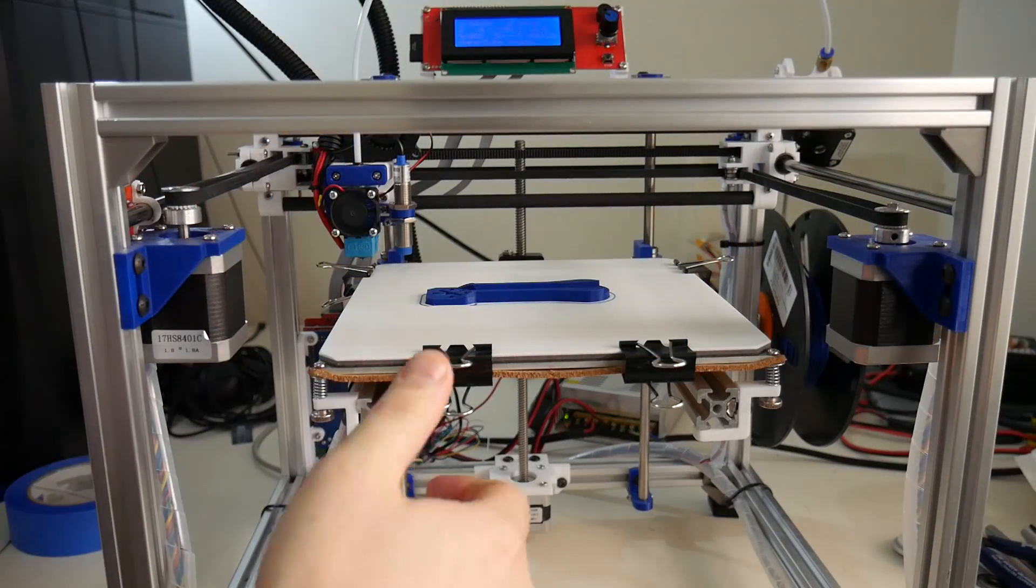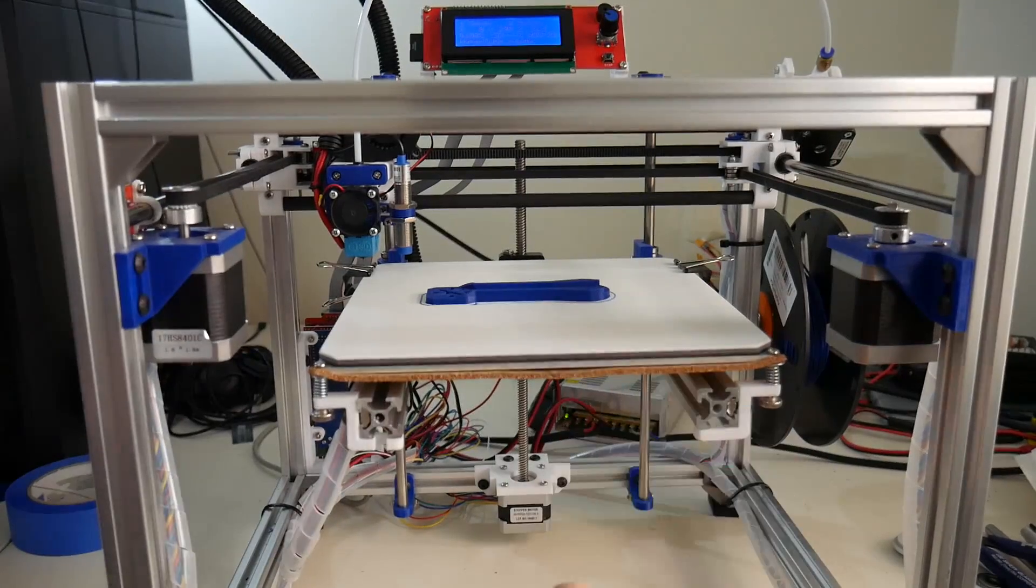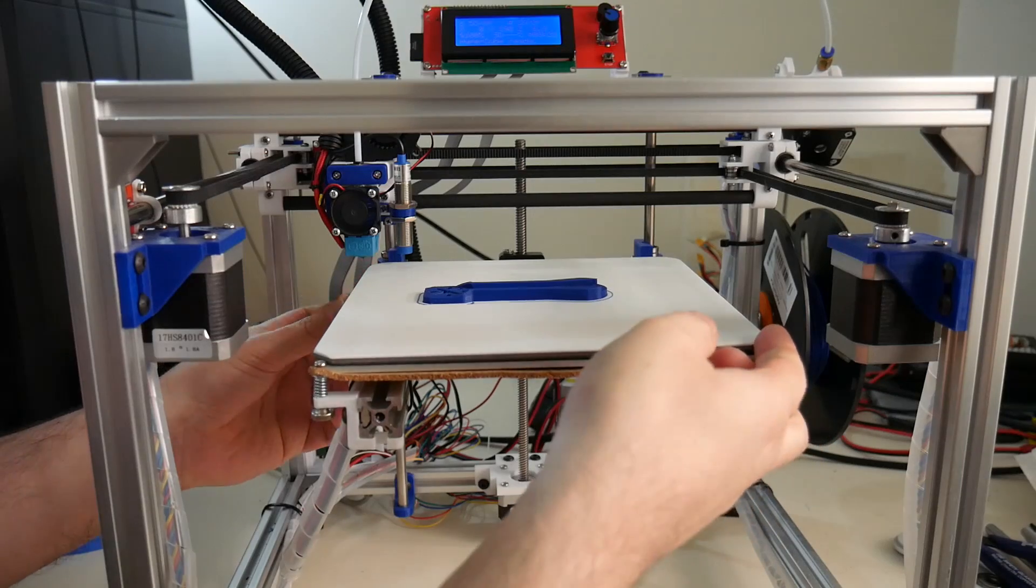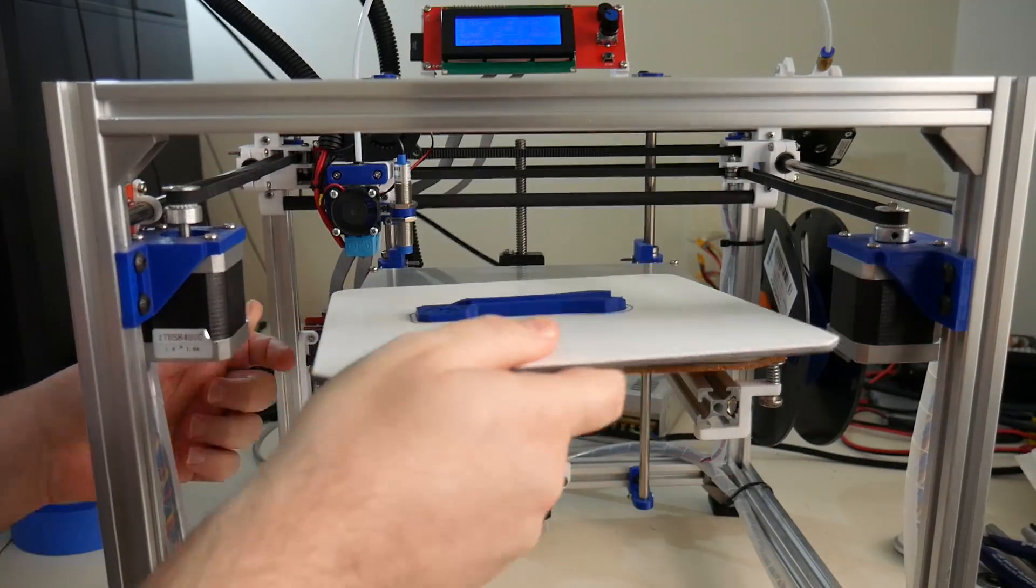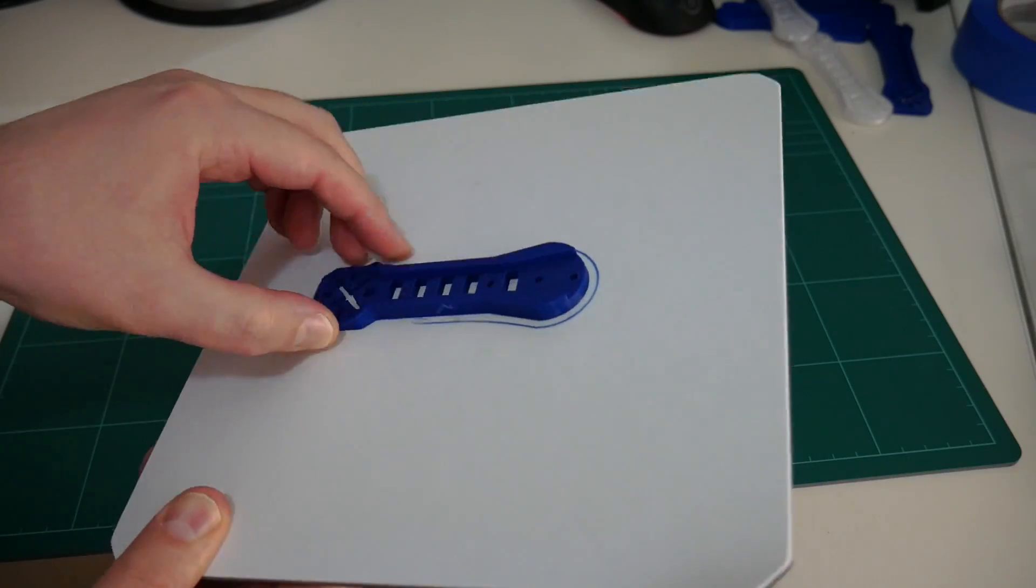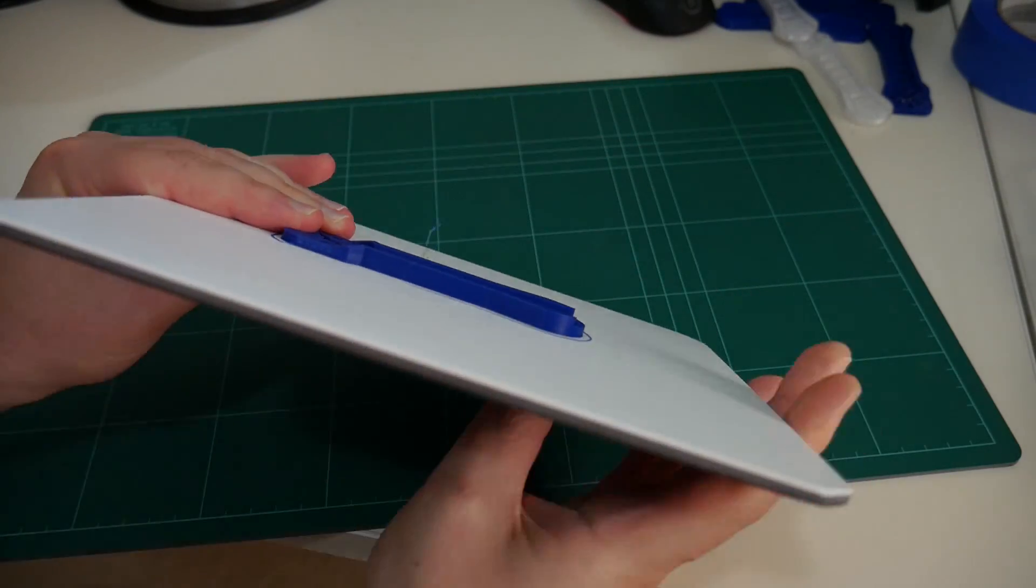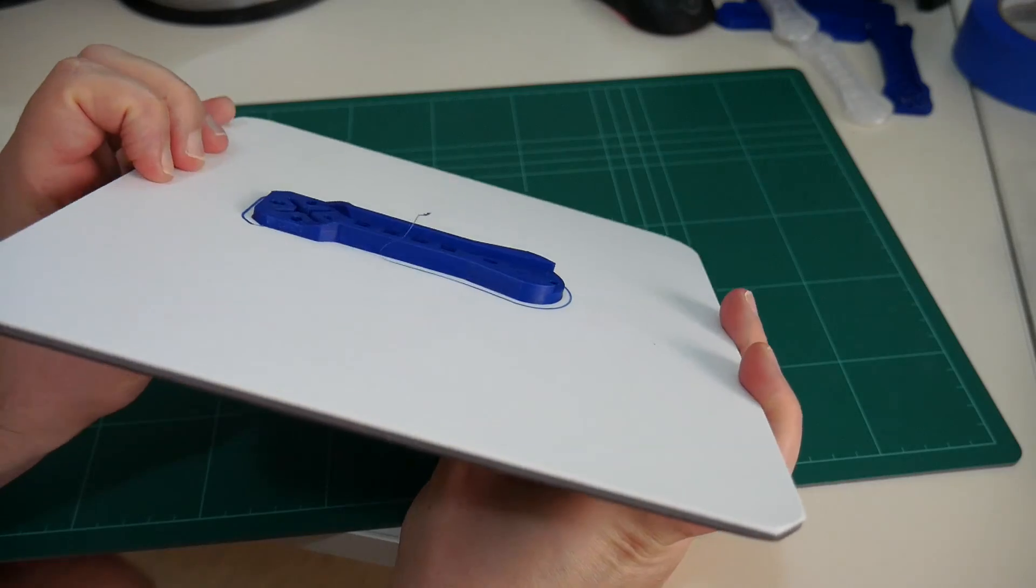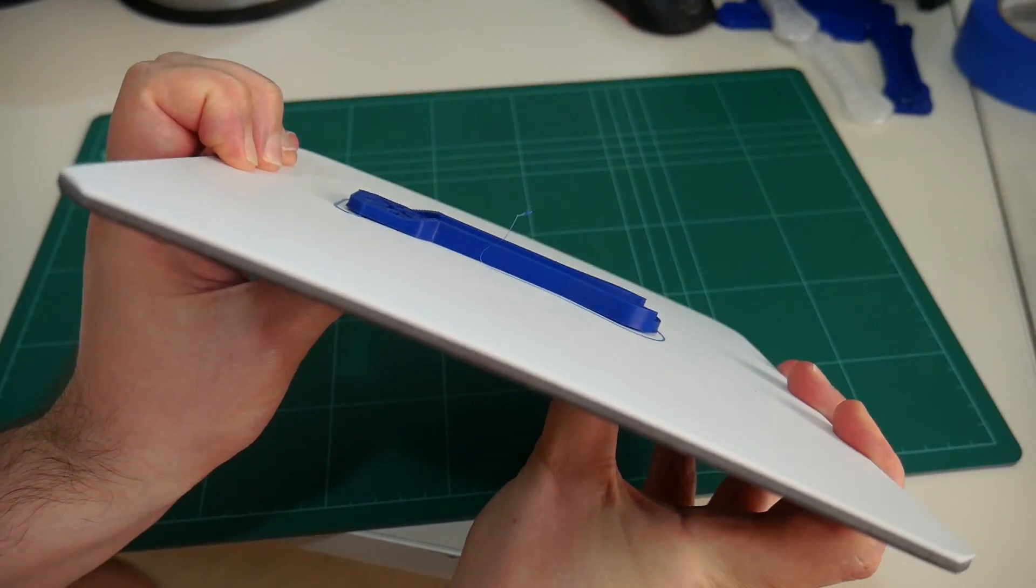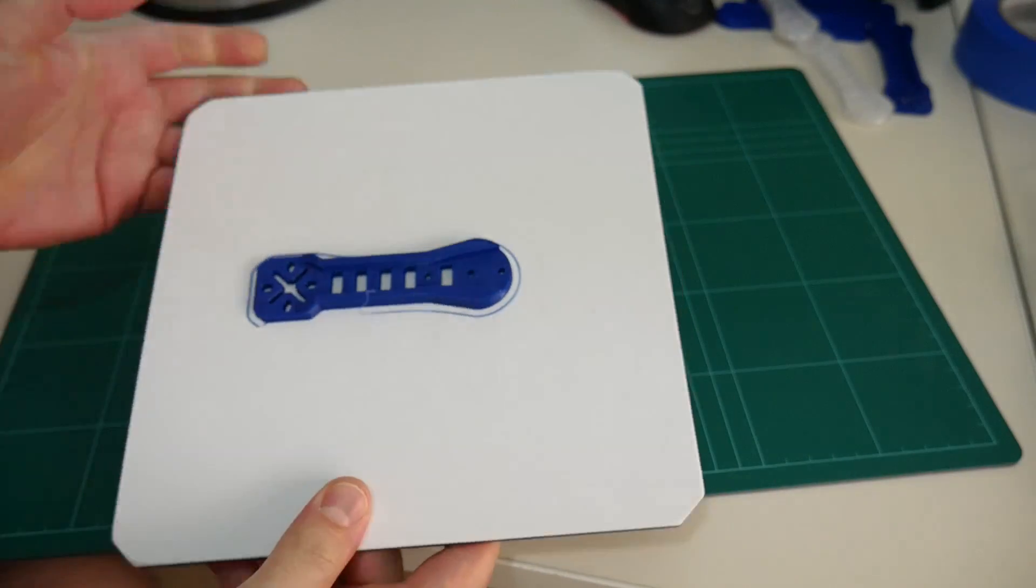The PLA print is now complete, remove these binder clips. The part is stuck on pretty well, it's not going to come off on its own. Let's do the flex test and see if it'll just pop off. Here we go. Oh yeah. What a great sound.